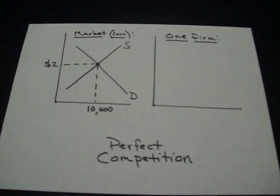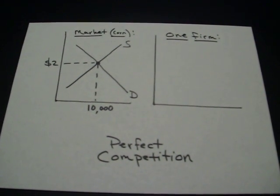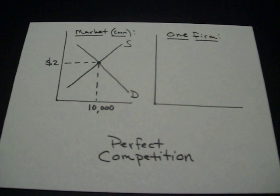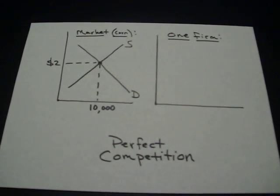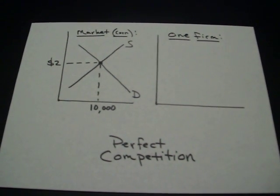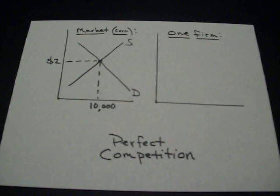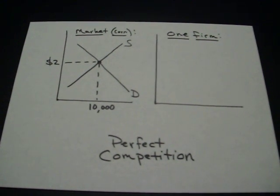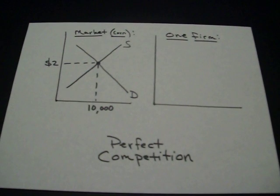Now one firm in perfect competition just has to accept that price decided by supply and demand because there's thousands of different firms. They're all selling homogenous products. There's no way to differentiate between one firm's corn and another firm's corn. So they all just have to charge the going rate, which is $2.